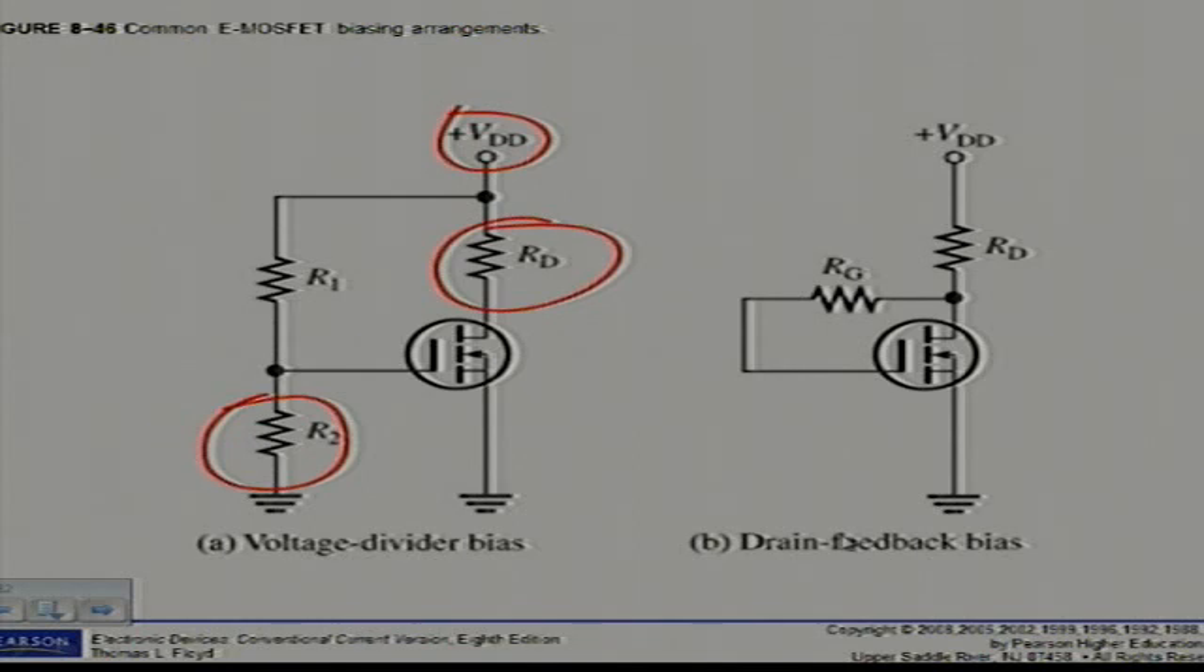So in the drain feedback circuit in figure 8.46B, there is a negligible gate current and therefore no voltage drop across RG. This makes VGS equal to VDS.